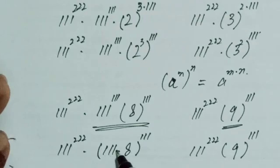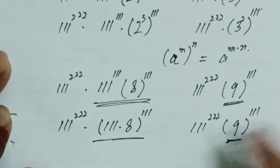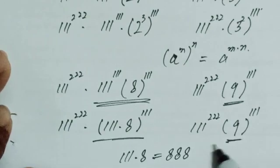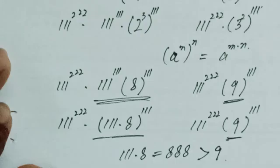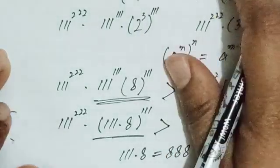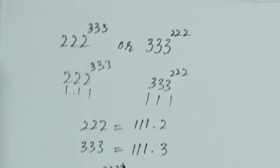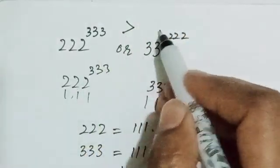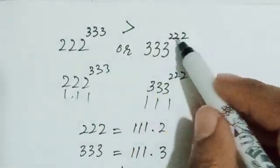111 multiplied by 8 equals 888, and 888 is clearly greater than 9. Therefore 111·8 > 9, which implies the whole first expression is greater. This concludes the proof: 222^333 is greater than 333^222.